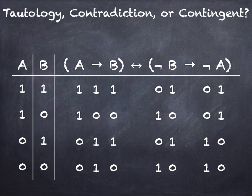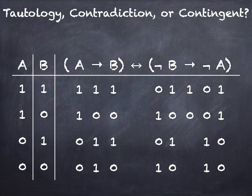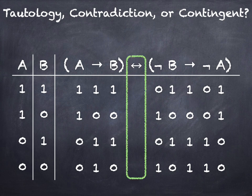Now let's walk through the second half of the expression a little bit more carefully. We've got 'if 0 then 0' — that's a 1. Whenever you've got a 0 in the antecedent the conditional is a 1. The second line is a 1 and a 0, so that's a 0. Then we've got a 0 and 1, so that's a 1. And then we've got 1 and 1, which is also a 1. So now we're going to go ahead and compute the main connective, which is this biconditional.